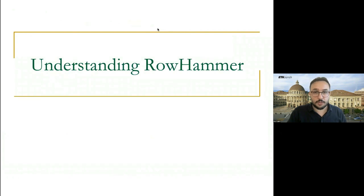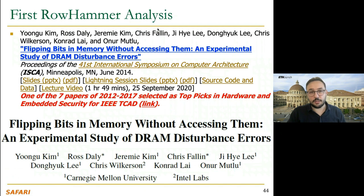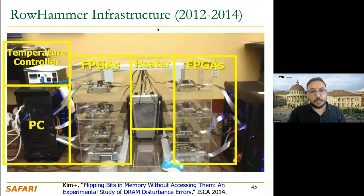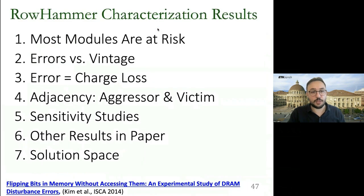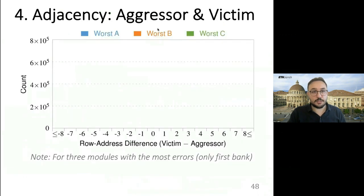To cover all of these, from the early works of RowHammer, I'd like to refer you to a retrospective paper published in 2019. I will continue with recent works on understanding RowHammer. This was the first work in ISCA 2014, and in this work we used our infrastructure and tested many DRAM modules from 2008 to 2014.